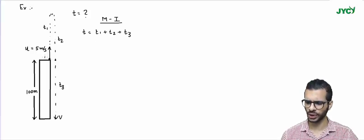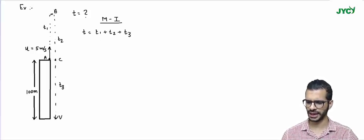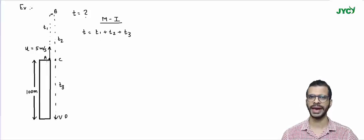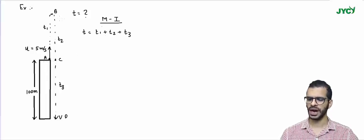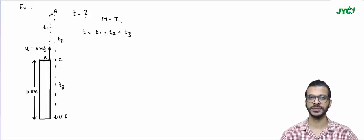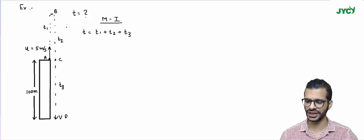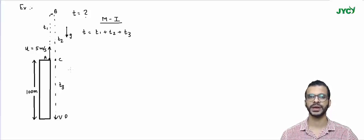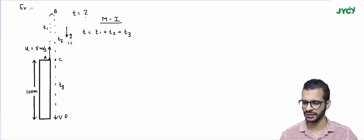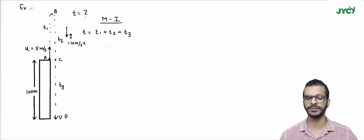Let's label the points: the starting point is A, the highest point is B, the point at the top of the building (same as A) is C, and the ground is D. Note that A and C are the same point. Now, acceleration due to gravity will always act downward, and we'll take its value as approximately 10 meter per second square.